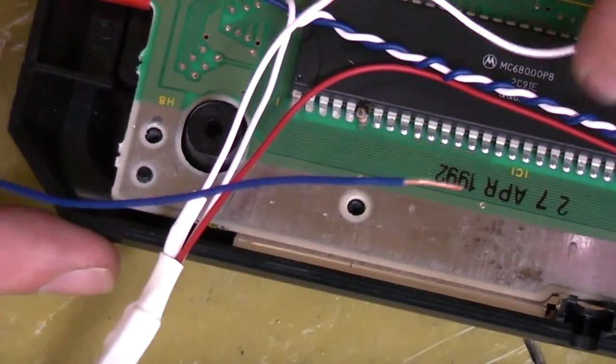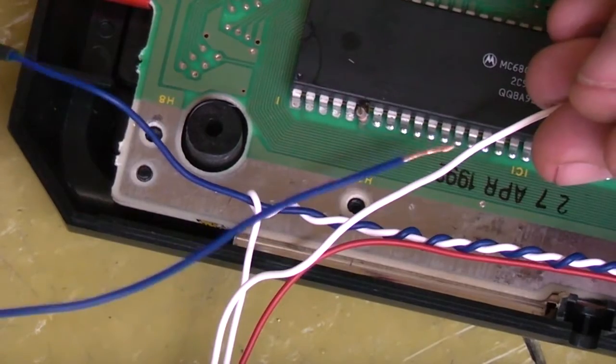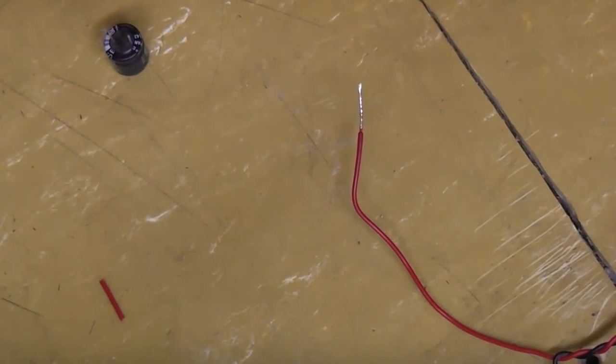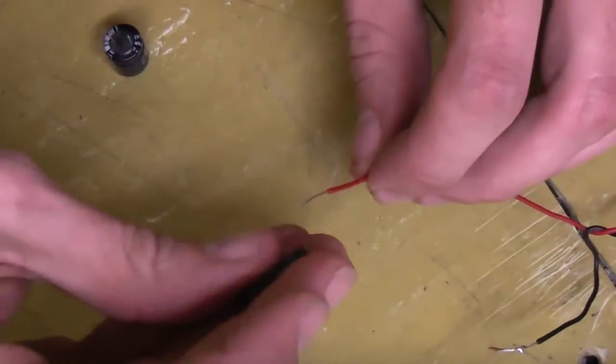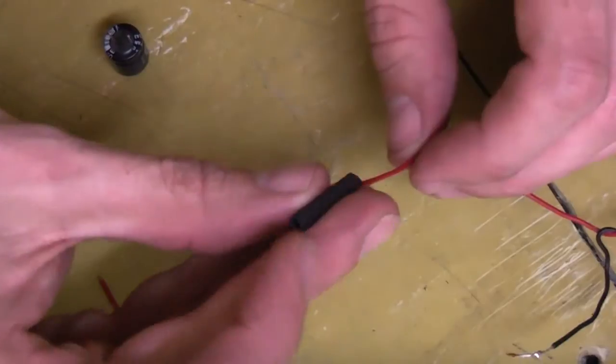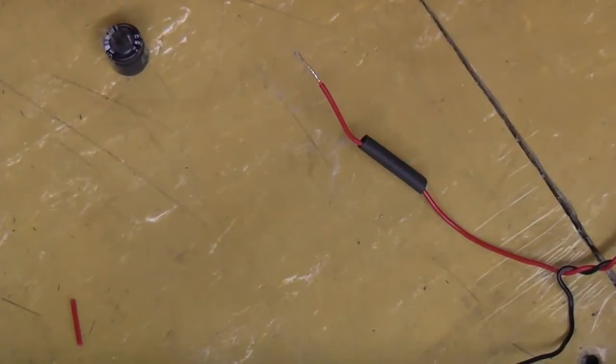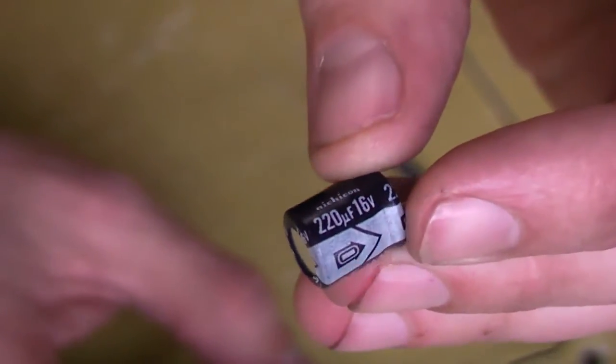Now we're ready to actually attach to our socket. So we've got our chroma all done, and we've got our luma ready to go. The red wire that I attached to pin 20 on the Sony video chip, just going to put a bit of heat shrink on there. And we're going to attach it to our capacitor. Again, this one is a 220 microfarad 16 volt, same as what we used before.